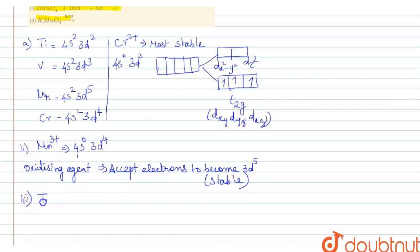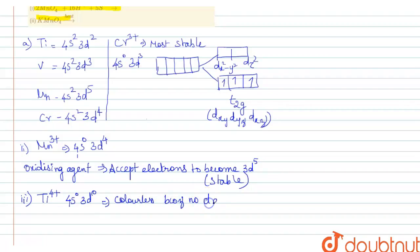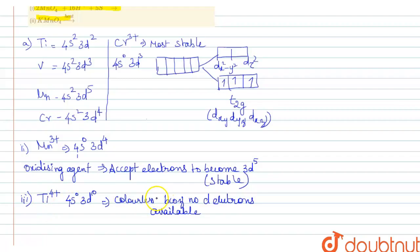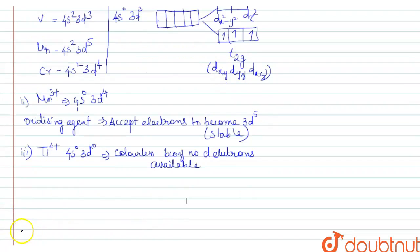As for the third question: Ti4+ has the configuration 4s0, 3d0. Since there are no d-electrons, this ion is colorless. No d-electrons are available for d–d transitions, and d-electrons are responsible for the color of transition metal ions. Since Ti4+ has no d-electrons, it remains colorless.